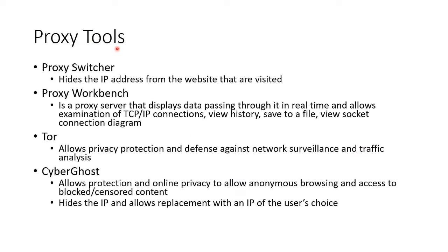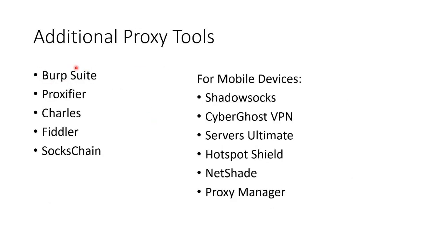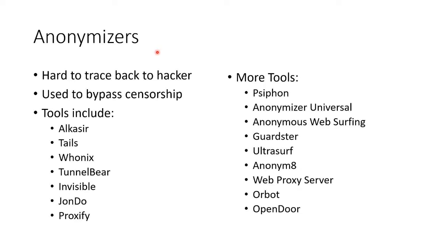Different proxy tools include: Proxy Switcher, which hides the IP address from the website you're visiting; Proxy Workbench, which displays data passing through it in real time and allows you to view connections, history, save to a file, and view socket connection information; Tor, the dark web, which allows privacy protection and defense against network surveillance and traffic analysis; CyberGhost, which allows online privacy protection for anonymous browsing and access to blocked or censored content, and hides the IP while allowing replacement with an IP of the user's choice. Other tools include Burp Suite as a built-in browser proxy, SocksChain, and proxies for mobile devices. There are loads of anonymizing tools on the internet used both by hackers and legitimate users to bypass censorship.